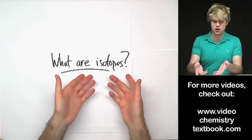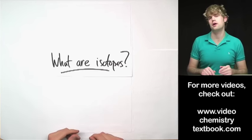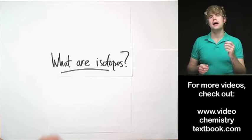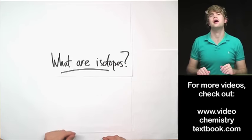What are isotopes? Isotope is a word that gets thrown around in chemistry a lot. So, what are they? Really quickly, isotopes are different versions of an element or different versions of a certain kind of atom.